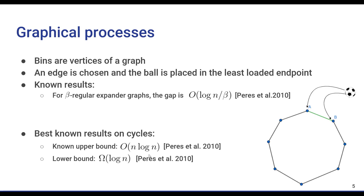More recently, the graphical version of these processes was also analyzed by Perez et al. In this version, the bins are the vertices of a graph. And at each step, an edge is chosen,